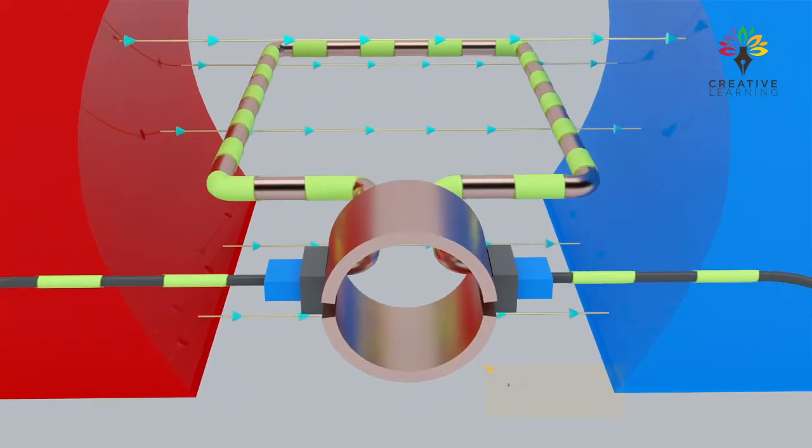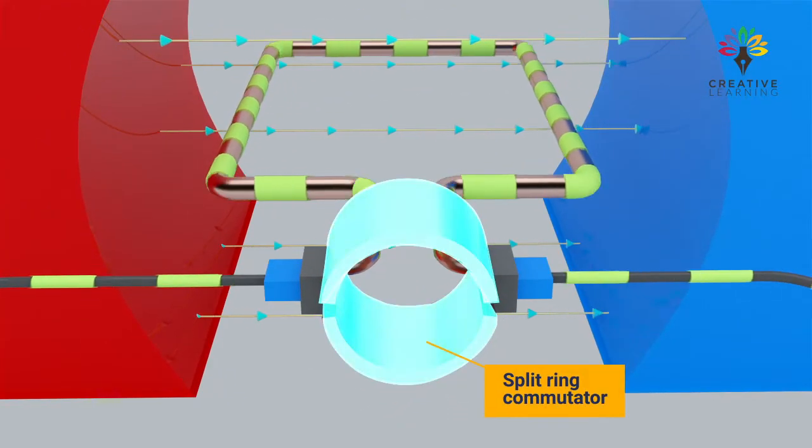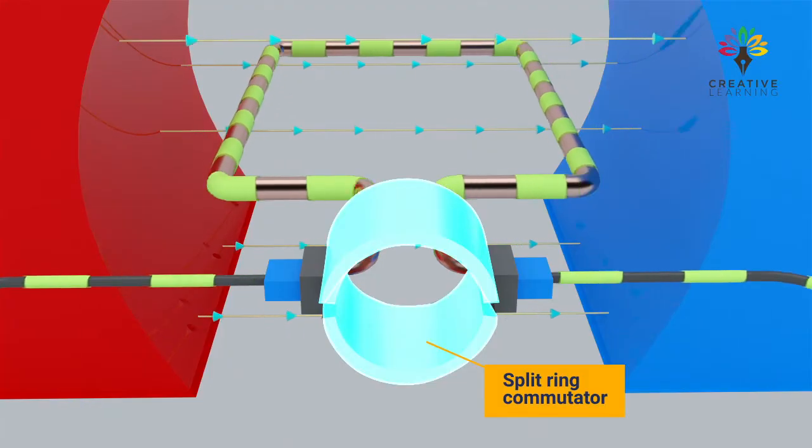The brushes are in contact with a split-ring commutator, which consists of two segments known as the commutator segments.